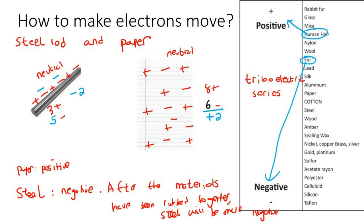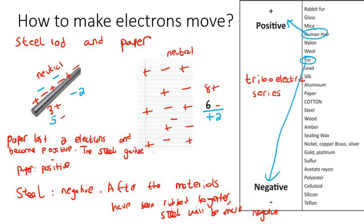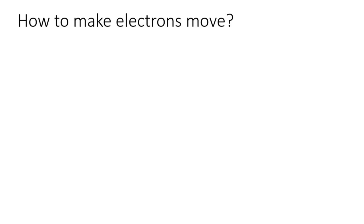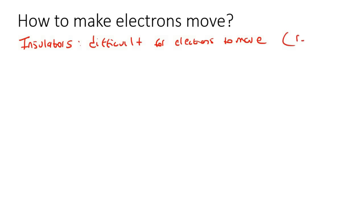Here's a quick summary: the paper lost two electrons and therefore became more positive, and the steel gained two electrons and became negative. With insulators, it's difficult for electrons to move, so we would use some type of rubbing or friction to try to get them to move.